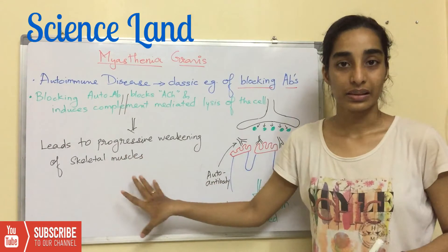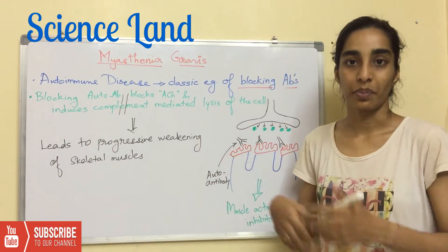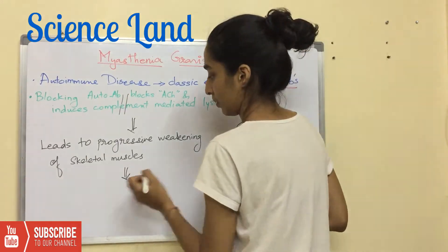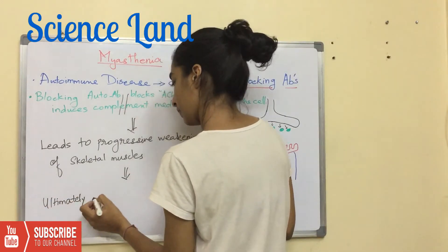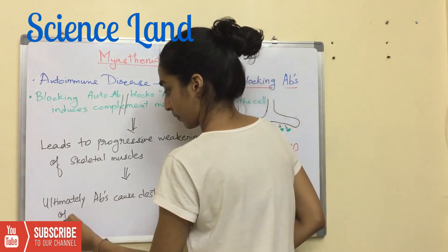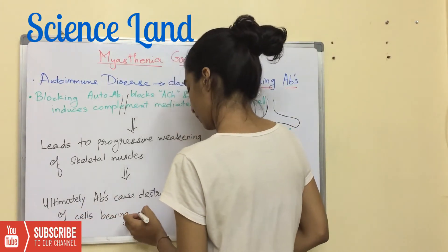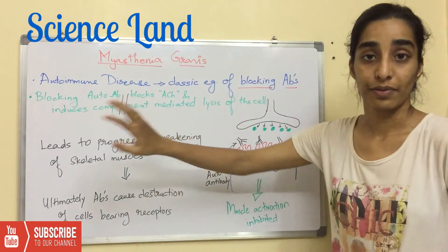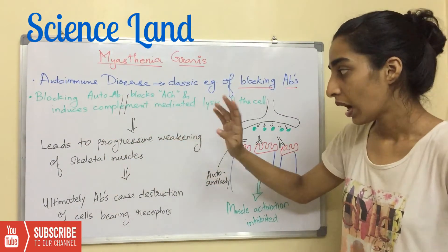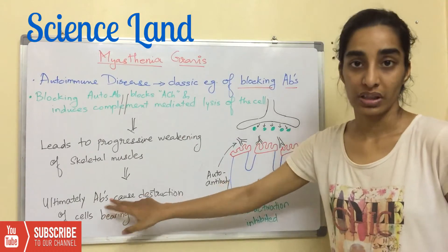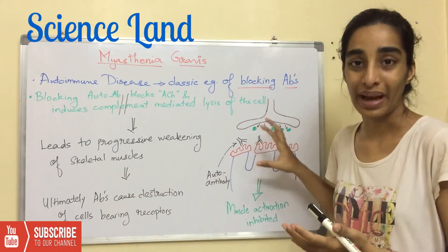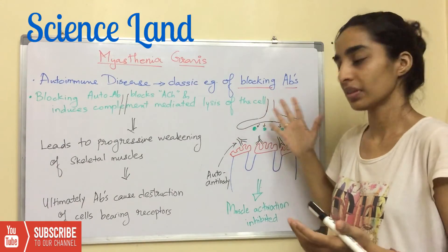This leads to progressive weakening of the skeletal muscles. Skeletal muscles weaken because muscle activity is basically inhibited. Ultimately, the antibodies cause the destruction of the cells that bear those acetylcholine receptors.